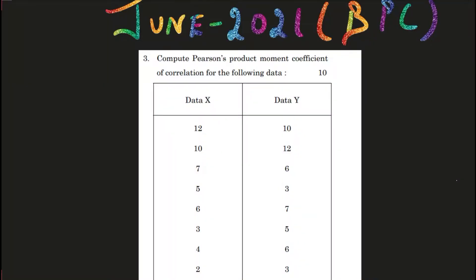So guys, the question says to compute the Pearson Product Moment of Correlation, i.e., PPMC. Sometimes the question just says 'Pearson method' — in that case you also have a raw score method, which I've explained in previous videos and which is quite easy. But when it's specifically written 'Pearson Product Moment Coefficient of Correlation,' that means you cannot use the raw score method; you must use the Pearson Product Moment of Correlation formula.